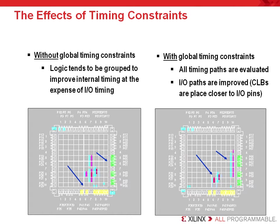In this example, we took a small and simple design and implemented it without the use of any timing constraints or pin assignments — shown on the left-hand side. Note the logical structure of the placement of logic and the I/O pins. The implementation tools do a good job of placing and routing the design without timing constraints. The logic is grouped close together to provide a good internal frequency and minimize clock skew.